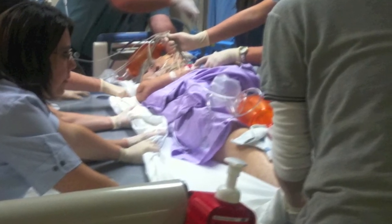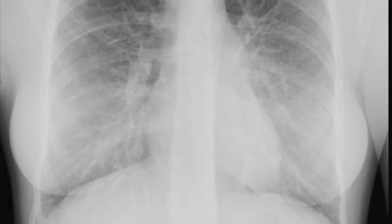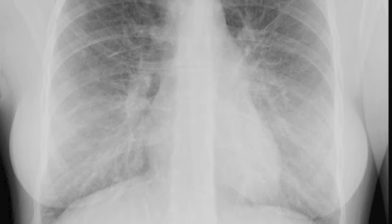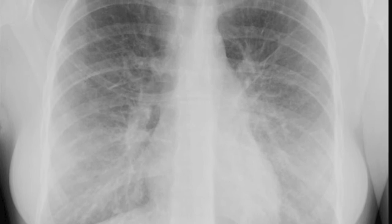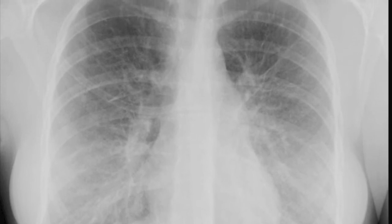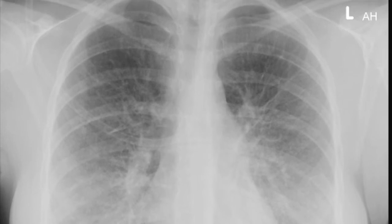The standard chest x-ray is taken in the postero-anterior position, such that the x-rays pass from the back of the patient to the front in the erect position. For various reasons, this may not always be practical in an unwell patient. When the x-ray is taken in the antero-posterior position, the heart and mediastinal structures are positioned further from the x-ray plate, resulting in magnification as the x-rays diverge. This limits inferences on the size of the heart.